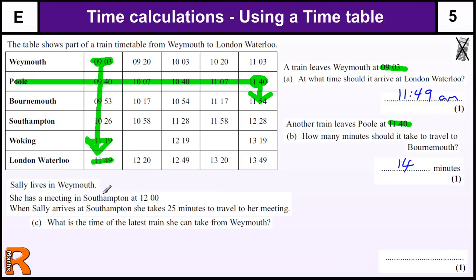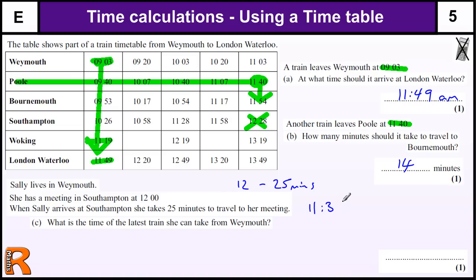Here's a time calculation: Sally lives in Weymouth and has a meeting in Southampton at 12 o'clock. When she arrives at Southampton, she takes 25 minutes to travel to her meeting. This is a standard question where you pick a train that arrives before the meeting starts, so she has time to get there. We need to do 25 minutes before 12, so 12 minus 25 minutes is 11:35. She needs to get into Southampton station by 11:35.